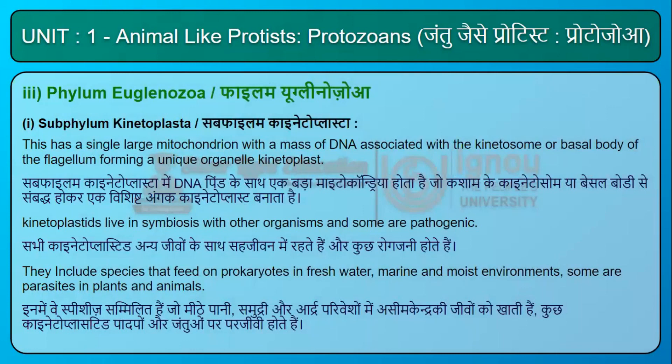Subphylum Kinetoplasta has a single large mitochondrion with a mass of DNA associated with the kinetsome or basal body of the flagellum, forming a unique organelle called the kinetoplast. Kinetoplastids live in symbiosis with other organisms and some are pathogenic. They include species that feed on prokaryotes in fresh water, marine, and moist environments; some are parasites in plants and animals.